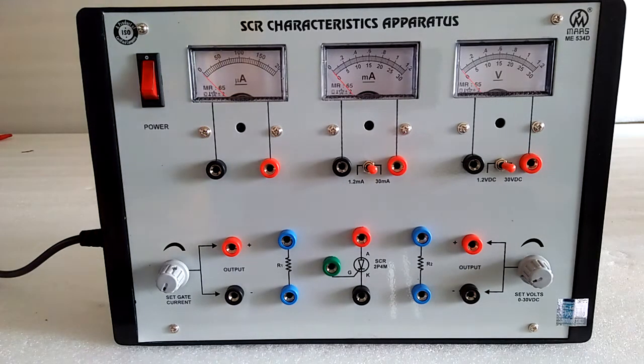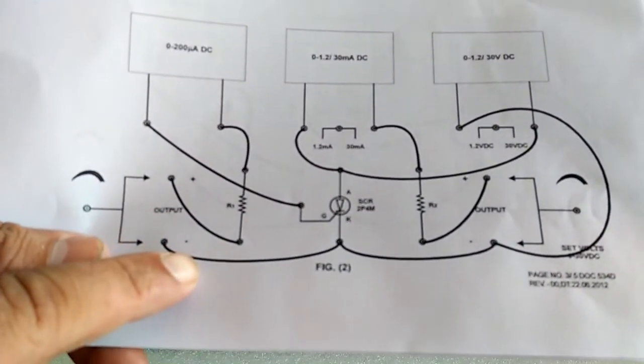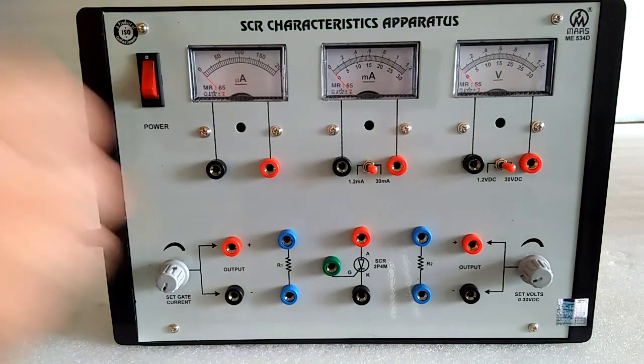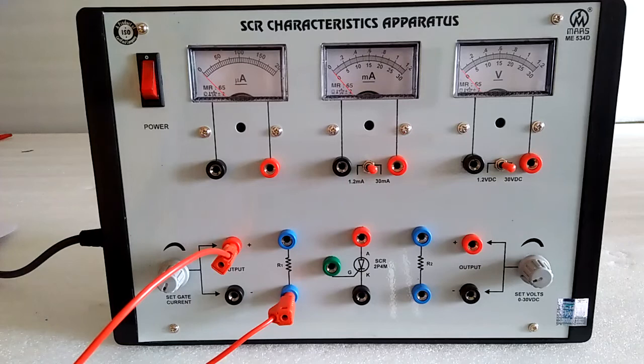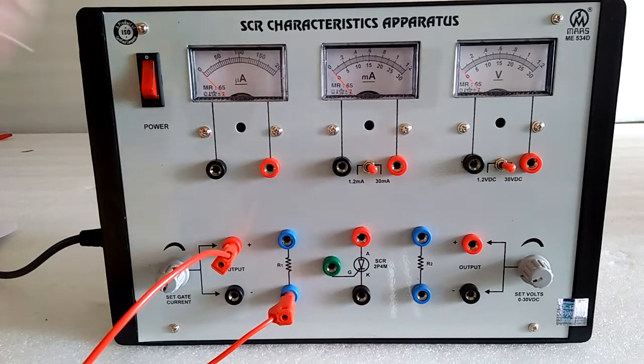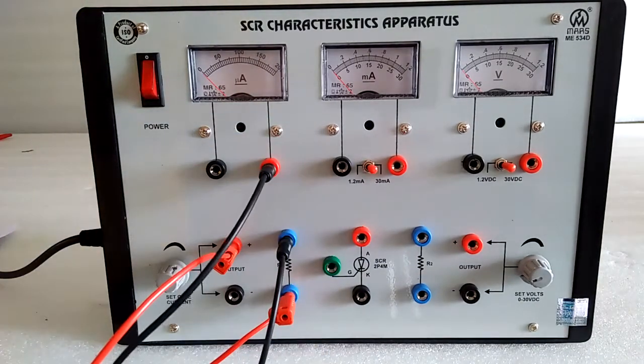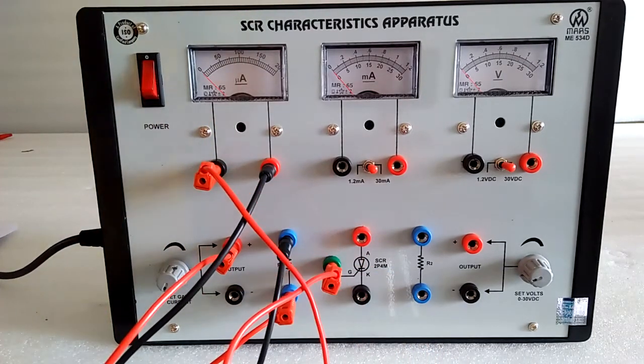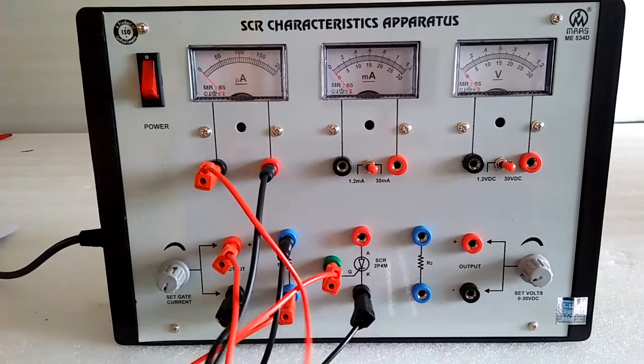Now I will tell you the connections. In the manual as per the procedure connections are made. Positive goes to custom resistance, then gate current we will add. Now this goes to gate terminal, then we connect the ground to the supply.